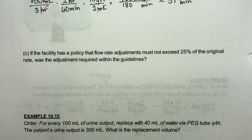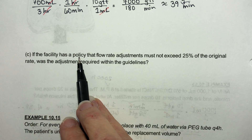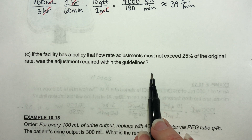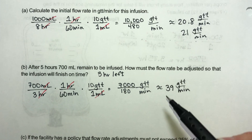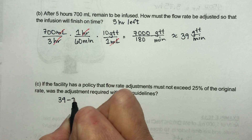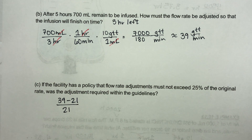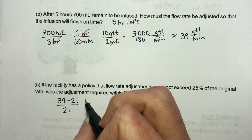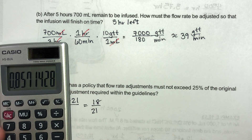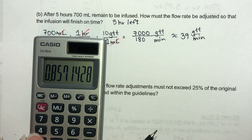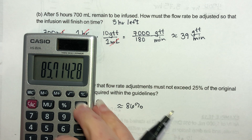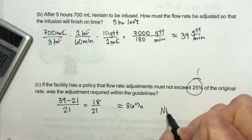Now, the facility has a policy that flow rate adjustments must not exceed 25% of the original rate. Is this adjustment within the guidelines? The formula is change over original. The original was 21 drops per minute; the new rate is 39. So we do 39 minus 21 divided by 21: that's 18 over 21, multiplied by 100, which is approximately an 86% change. That is definitely bigger than 25%, so the answer is no — this adjustment would not be allowed.